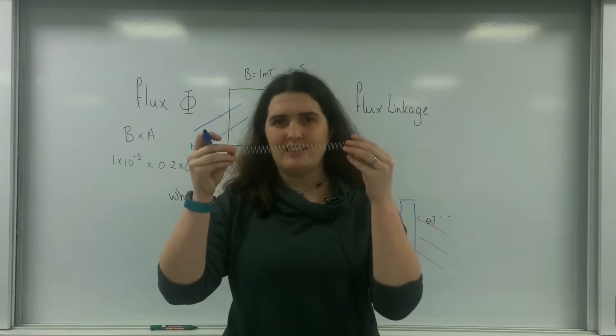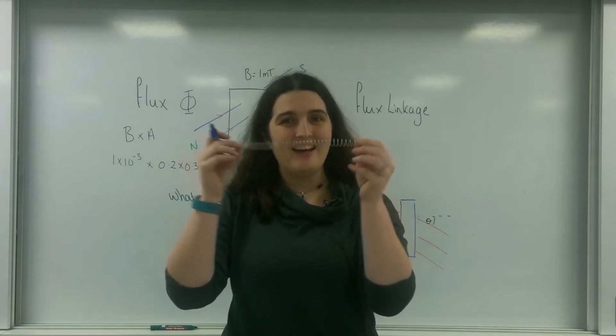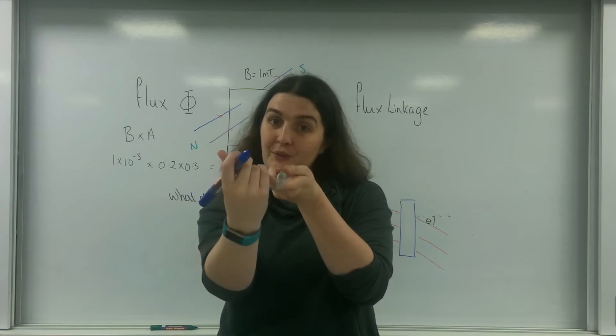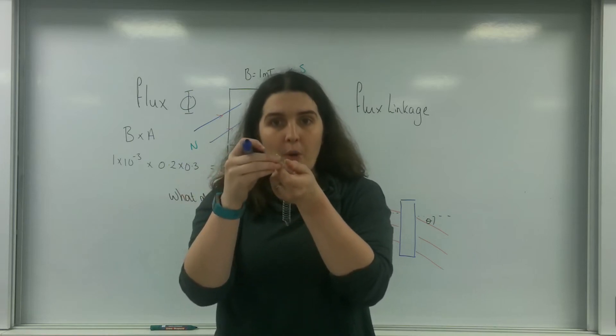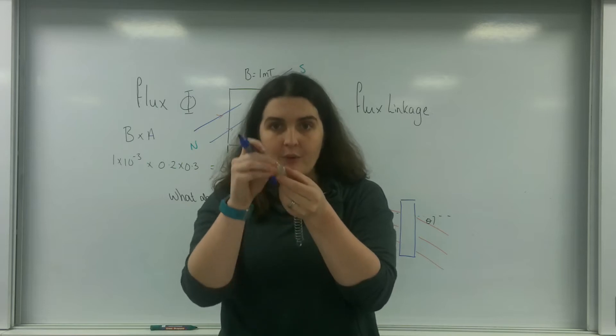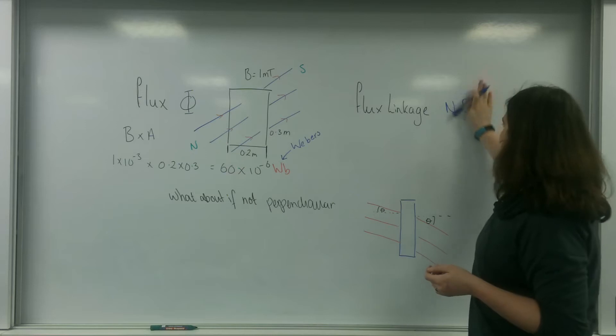This is called flux linkage and relates to the number of turns. Imagine this is a coil of wire. The amount of turns that the field lines are going past. So the flux that one feels, and then another one, another one, another one. Flux linkage is related by this formula: NBA. Or, BA being flux, N phi.